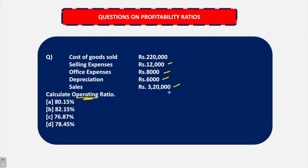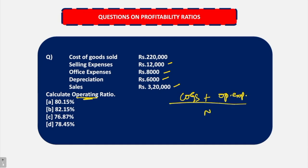Operating ratio, if you remember, the formula is COGS plus operating expenses minus operating incomes upon net sales. The sales are given as 3,20,000. COGS are also given as 2,20,000.